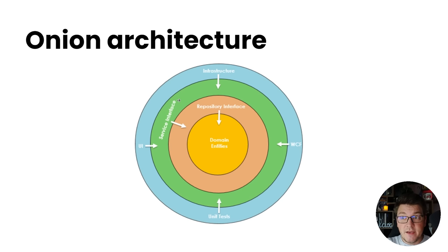The services also encapsulate any business logic that is part of the system but doesn't belong to the repositories. In the outermost layer of the onion architecture you have your infrastructure concerns such as your database, file storage, cloud storage, and so on. Then you have the user interface, which can be an ASP.NET Core MVC application or a web API, and you've also got your unit tests, integration tests, functional tests, and so on.